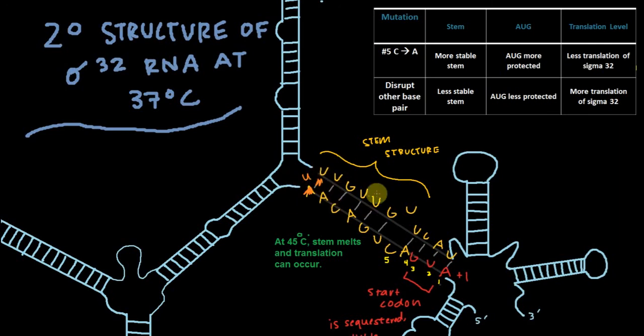That means that this stem structure is relatively weaker. This means that it's easier to break, it doesn't require the same amount of energy to make these no longer base pair. That results in the AUG being less protected because it's easier to break the stem, and that results in more translation of, relatively more translation of sigma 32.